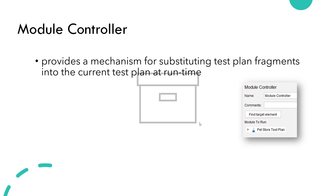You will also have the option of Find Target Element. Suppose if you select a controller or select a thread group and click on Find Target Element, it will reach there and display which element you are targeting.